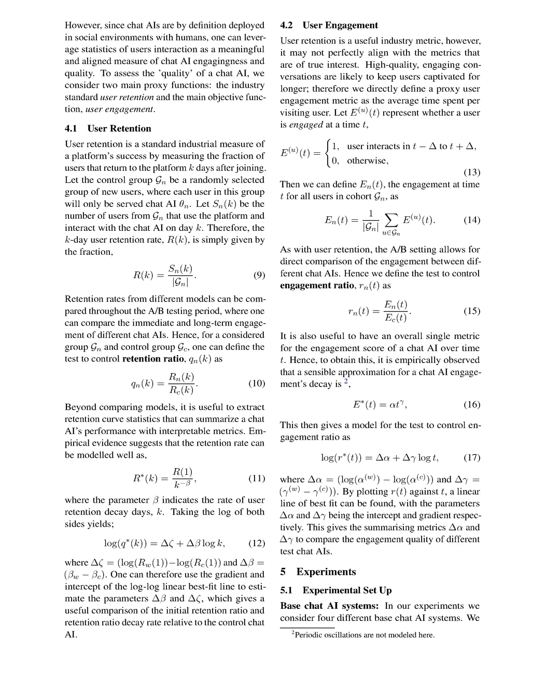Section summary. The objective of a chat AI is to create engaging conversations with users. This is achieved by training a language model on relevant textual data and using a reward model to improve the system's responses. Different chat AIs can be combined using ensembling techniques to create a system with overall better characteristics. Evaluating the quality of chat AIs can be done by measuring user retention and engagement, which are meaningful indicators of their performance.